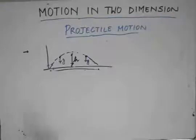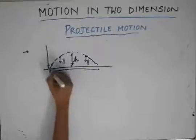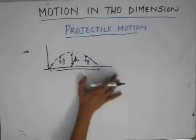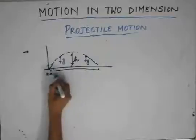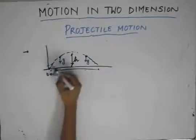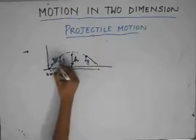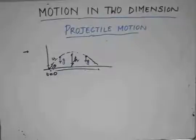The first case we consider: let a particle be projected from a horizontal surface. Let the particle be at this position at the initial time t equals 0, and let the particle be projected in this direction from the horizontal surface with some velocity u making an angle theta with the horizontal. Our first task is to find the equation of motion — the equation of the trajectory of the particle — and to prove that it is a parabola.